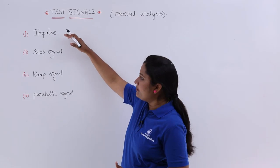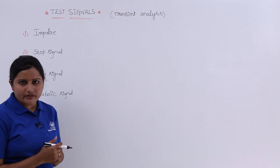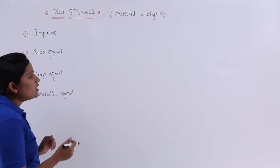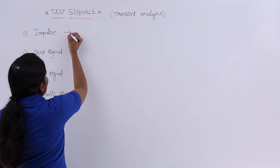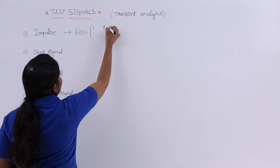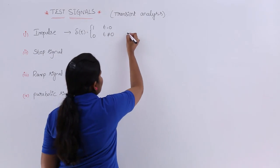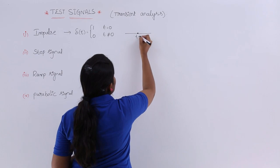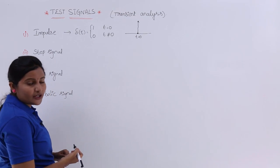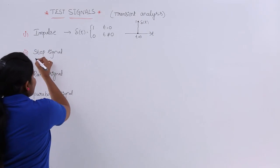The four test signals are impulse, step signal, ramp signal, and parabolic signal. We know the definitions from signals and systems, but here also I want to give the same definitions. The impulse signal is always represented with δ(t). δ(t) equals 1 when t equals 0, and 0 when t is not equal to 0. So δ(t) is nothing but an impulse at t equal to 0, with amplitude 1.